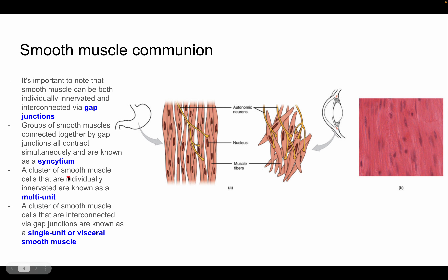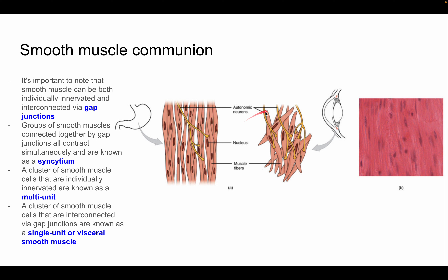A cluster of smooth muscle cells that are individually innervated is known as a multi-unit. A cluster of smooth muscle cells interconnected by gap junctions is known as a single-unit, or visceral smooth muscle, which lines many of the organs.